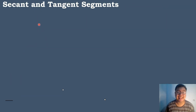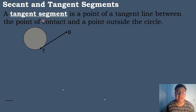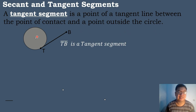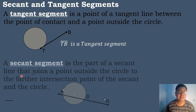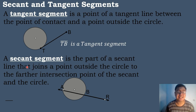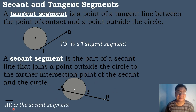We also have secant and tangent segments. When we say tangent segment, it is the part of a tangent line between the point of contact and a point outside the circle. In this given figure, we have segment TV as our tangent segment. Next, we have a secant segment. When we say secant segment, it is the part of a secant line that joins a point outside the circle to the farther intersection point of the secant and the circle. In this given figure, the secant segment is segment AR.